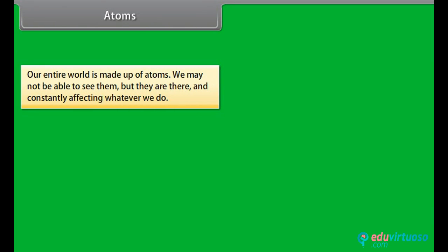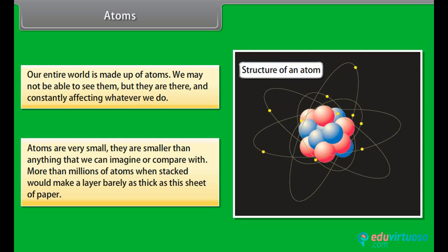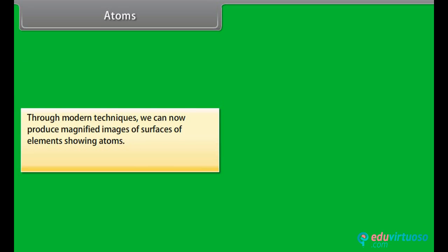Our entire world is made up of atoms. We may not be able to see them, but they are there and constantly affecting whatever we do. Atoms are very small. They are smaller than anything that we can imagine or compare with. More than millions of atoms, when stacked, would make a layer barely as thick as this sheet of paper. Through modern techniques, we can now produce magnified images of surfaces.